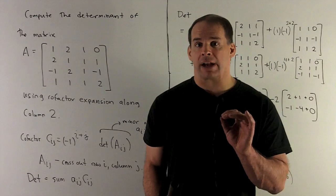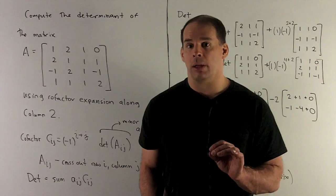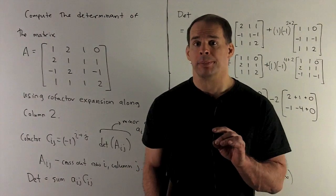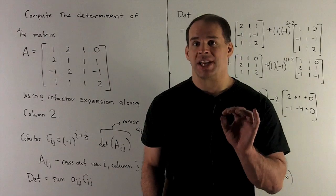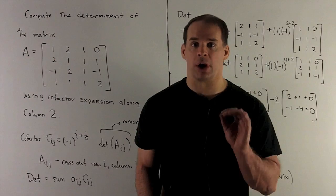That gives us the cofactor. To get the determinant, what do we do? We pick our favorite row or column. Then we're going to take the sum over the products in that row or column of the entries times the corresponding cofactor. That gives us our determinant.